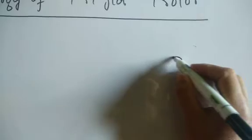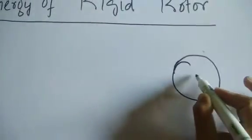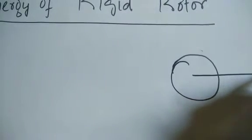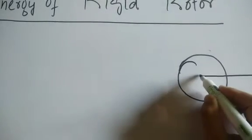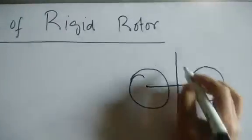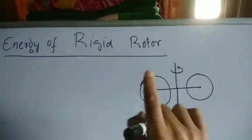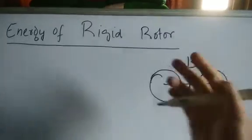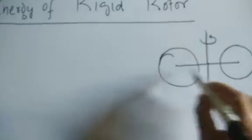A rigid rotor is basically a diatomic molecule - we'll take HCL as an example. This is the internuclear axis between H and Cl. We pass an axis through the center of gravity and rotate the molecule across this axis.